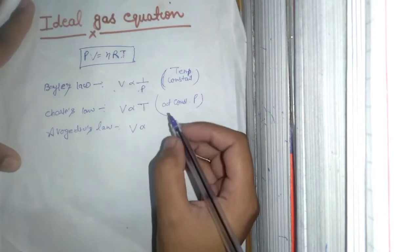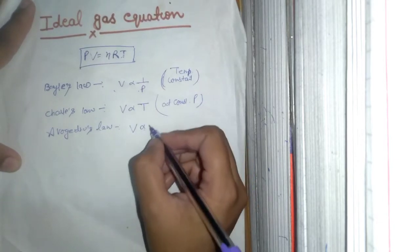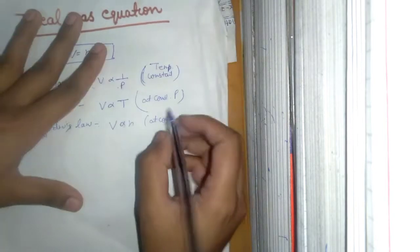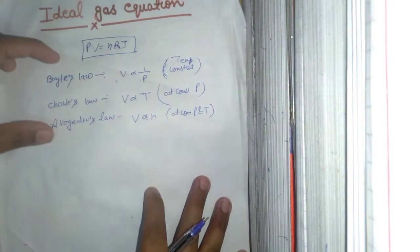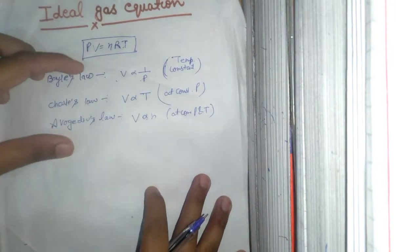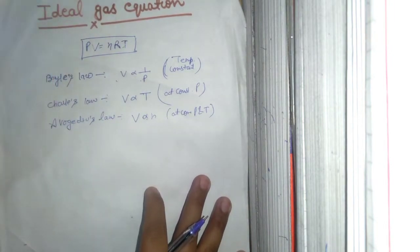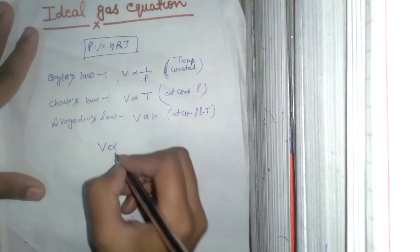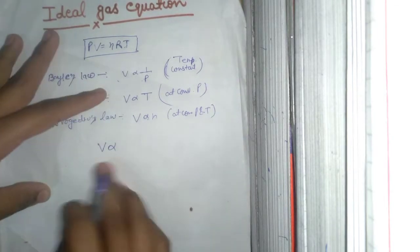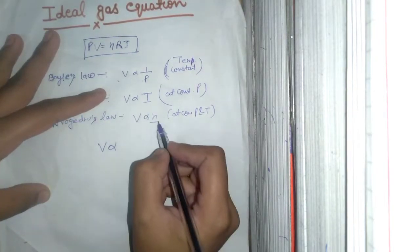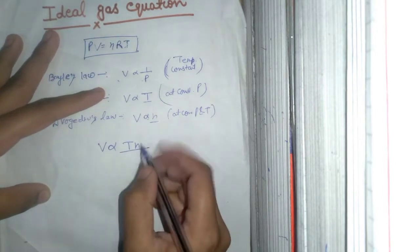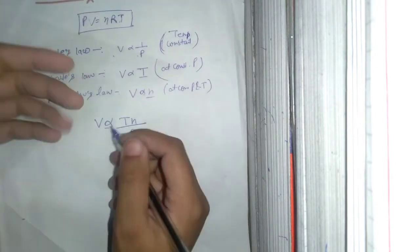In Avogadro's law, volume is directly proportional to the number of moles at constant pressure and temperature. Now there are these three laws. We combine these three laws and call it the ideal gas equation.